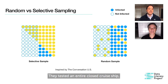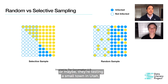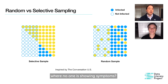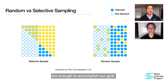They may have tested an entire closed cruise ship — say 700 people — where COVID became rampant, or maybe they're testing a small town in Utah where no one is showing symptoms. These are all questions to keep in mind. As to the point of how many tests are enough to accomplish our goal, Alan, take us there for a moment.